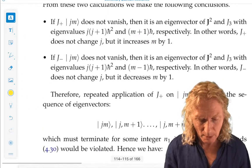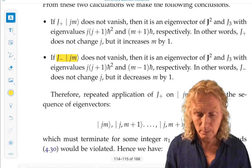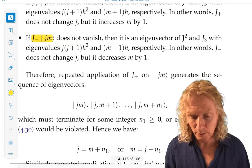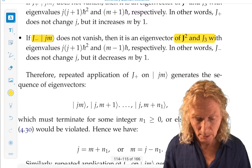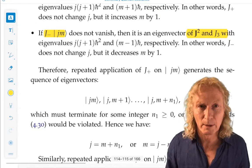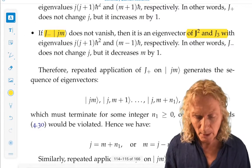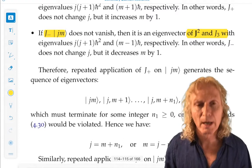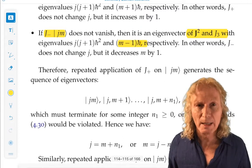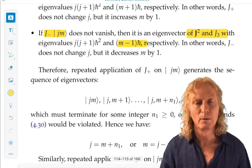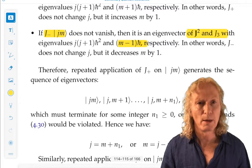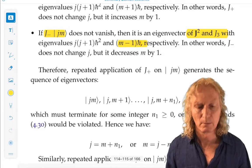Similarly, if J minus J, M does not vanish, then it's an eigenvector of J, both J squared and J3, with eigenvalue J times J plus 1, H bar squared, and M minus 1, H bar. So, J minus doesn't do anything to J, but it decreases M by 1.